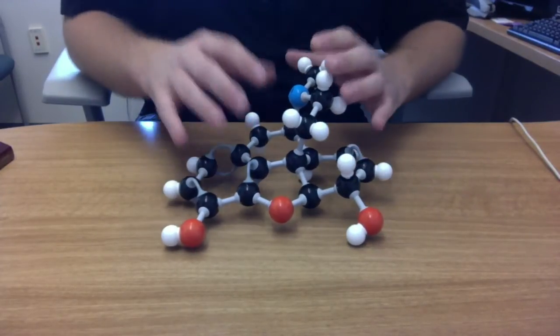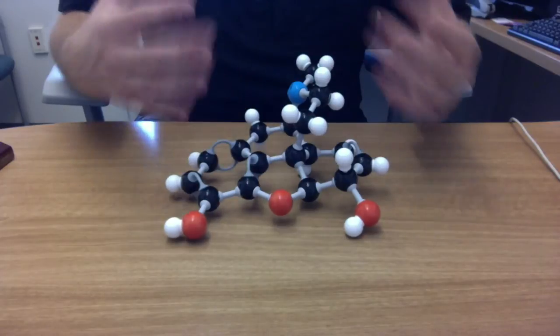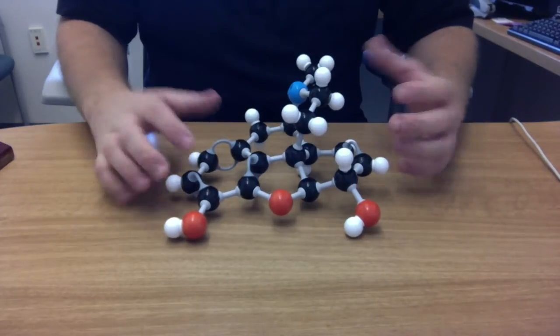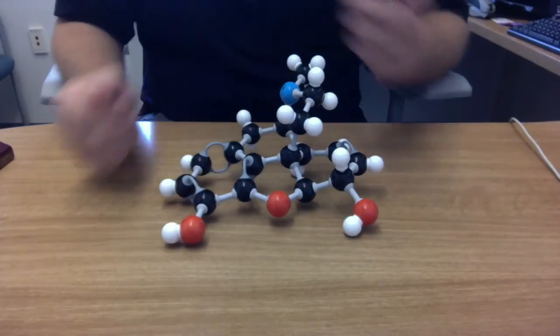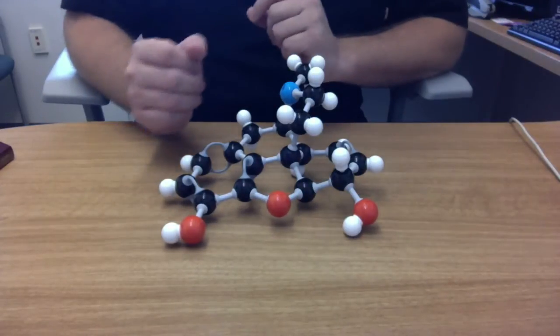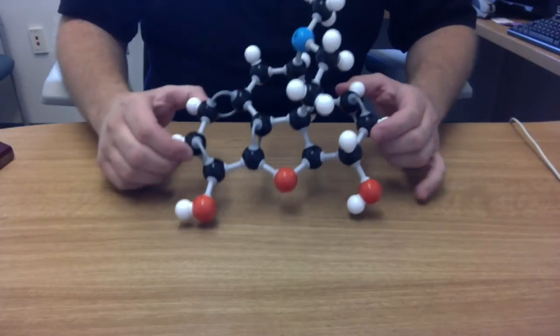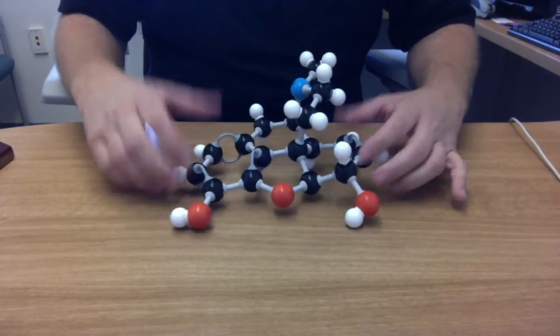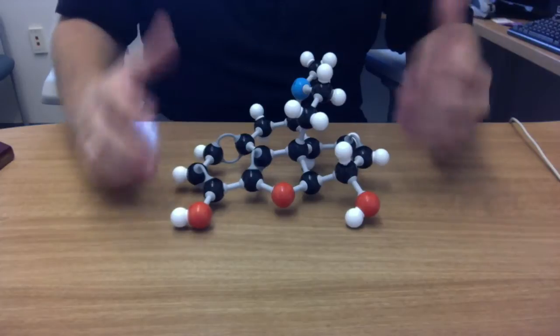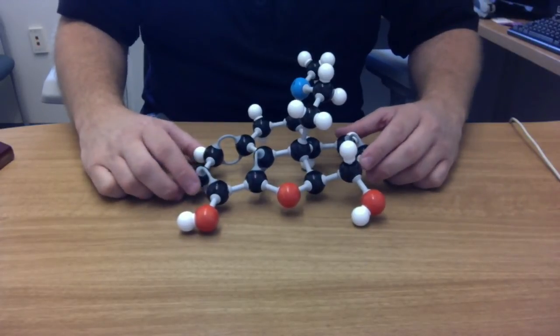Morphine is also called a quote unquote dirty drug in that it causes a physiological release of histamine. You administer this, and you can cause your patient to have a histamine dump. That's where you can get some of the nausea, some of the itchiness, some of the blood pressure may get low. By giving morphine, causing a release of histamine, you can have these hemodynamic changes that occur.